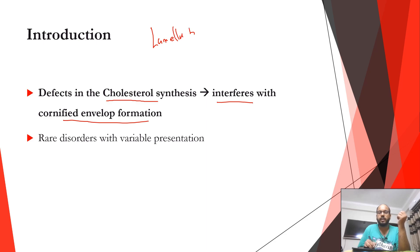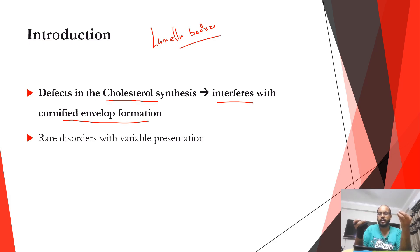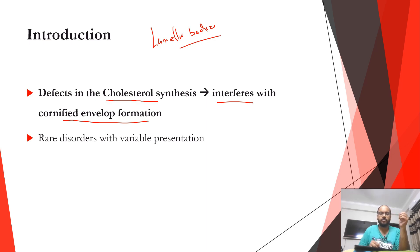I'd request you to go back and see the video on basics of keratinization, where we discuss the importance of lamellar bodies. Lamellar bodies are very important for the entire process of keratinization. If any one gene or protein is not working properly, you will have problems in the formation of corneocytes, corneodesmosomes, and other structures required for proper formation of the stratum corneum, leading to ichthyosis.